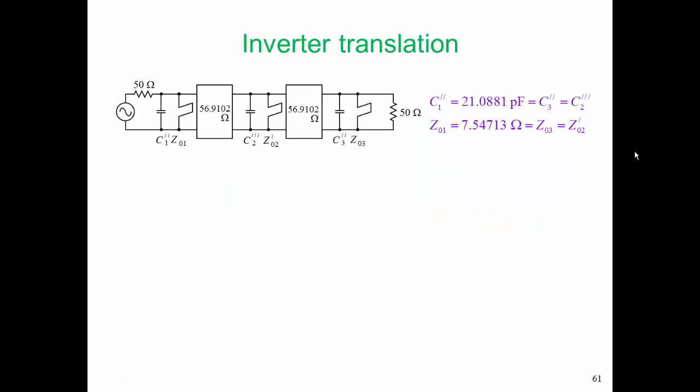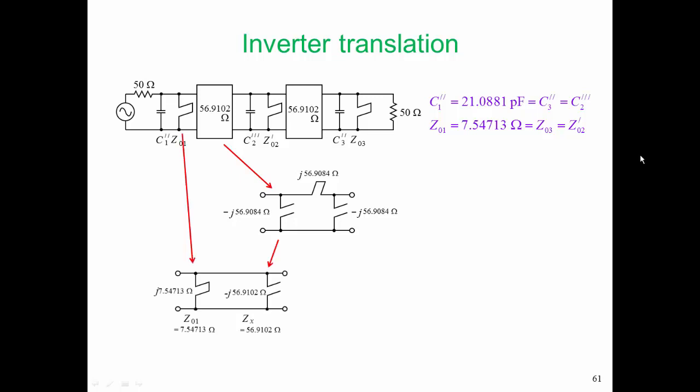Here is our prototype at the end of Step 6. We can realize that first inverter by using that pi arrangement of stubs. Now, of course, we already have a stub there. So the stub Z01 and the stub with the characteristic impedance of 56.9 ohms are in parallel, and we will need to combine these stubs.